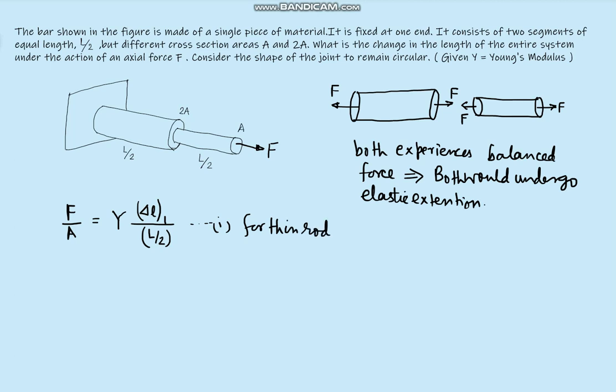Similarly we will be writing for the thick rod. Force divided by the cross-sectional area which is 2A is the stress, and that stress will be equal to Y into strain. Strain will be the change in length for the second divided by the original length. So this is the second for the thick rod. From these two we find out the extension of the first and the extension of the second.